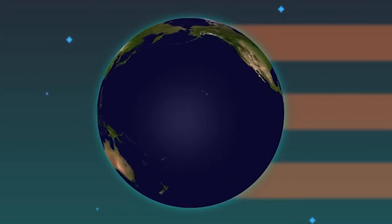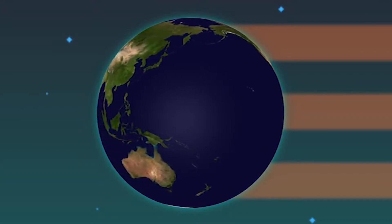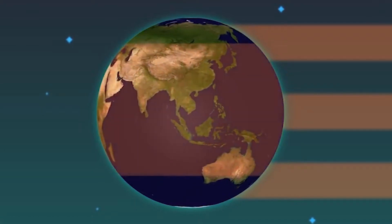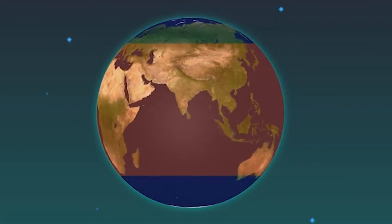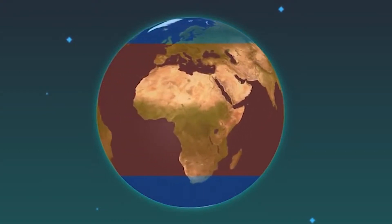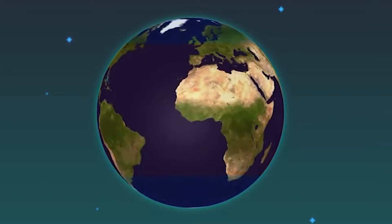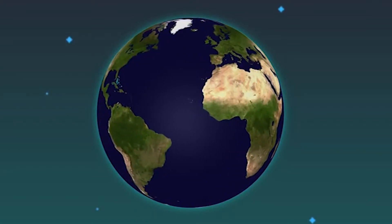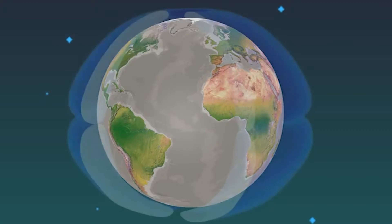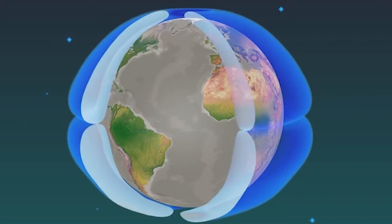At the equator, the warm surface causes lower pressure and rising air. At the poles, cold air produces high pressure and sinking air. If the Earth did not rotate, was covered only by water, and its rotational axis was not tilted — a simplistic model — this would describe the global circulation: air would rise at the equator, flow at high altitude to the poles, sink, and return to the equator along the surface, forming two gigantic circulating cells.